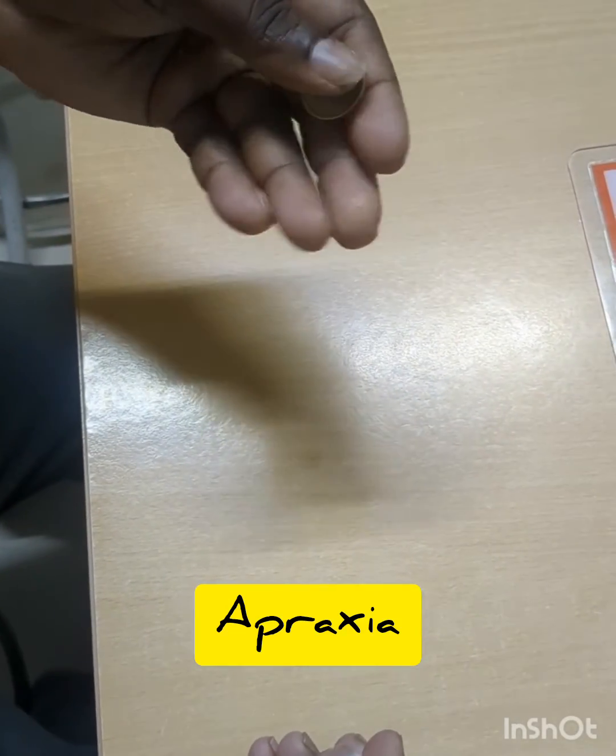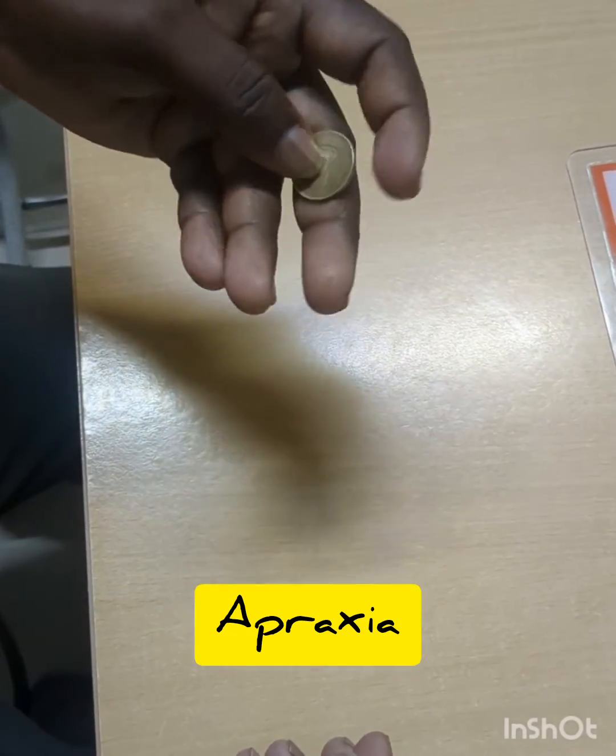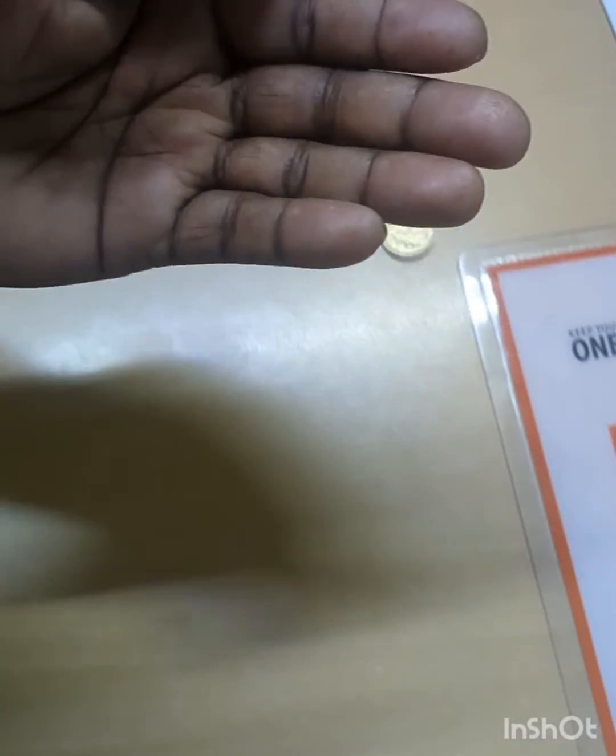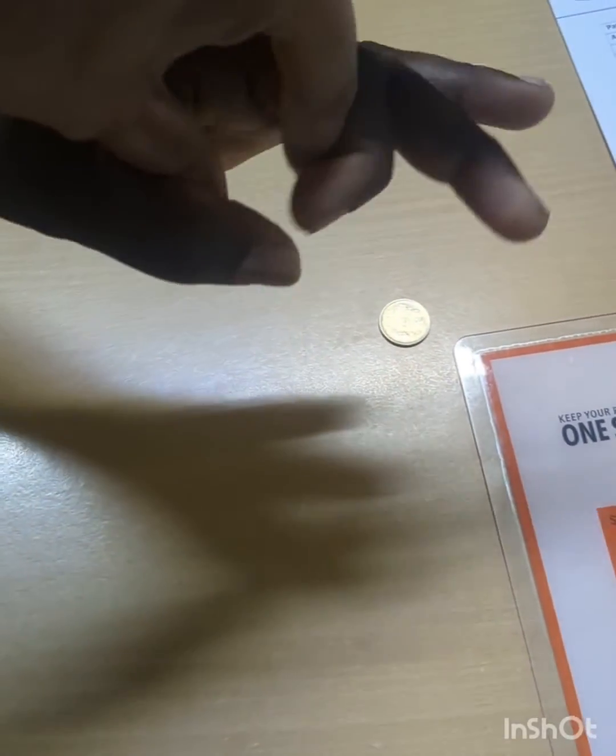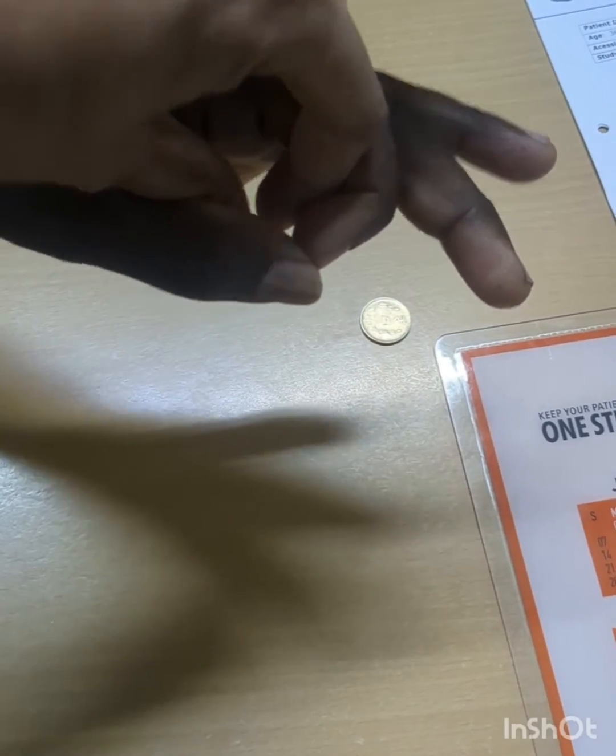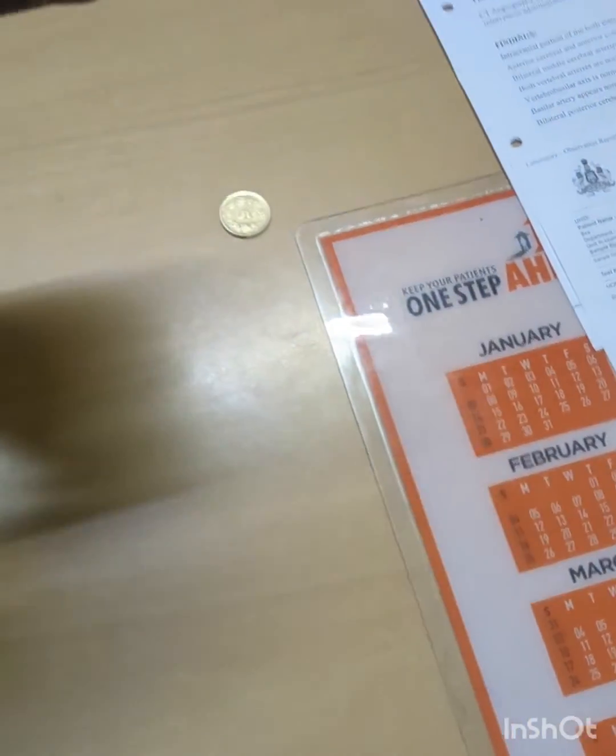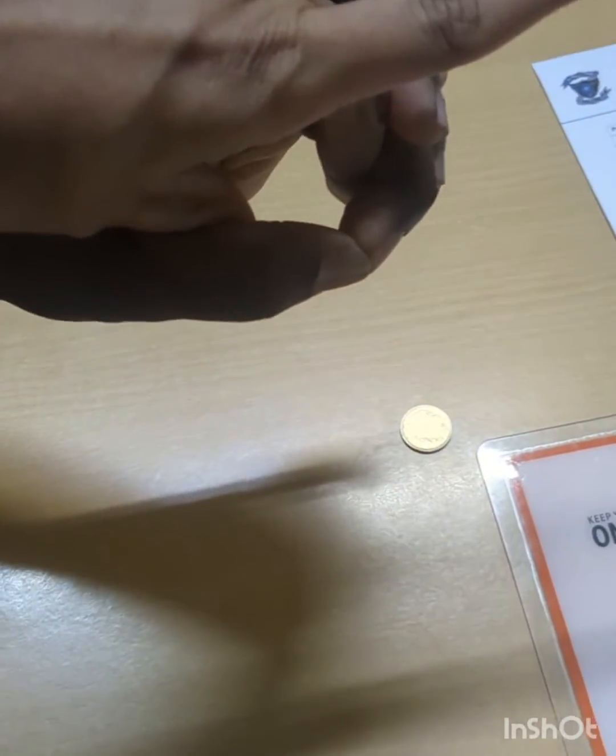So here the patient is able to understand the commands. He has good normal power, as you can see. I am trying to break the opposition of the fingers. He is able to resist it and he is having good hand grip. But still he could not do the task. This is called Apraxia.